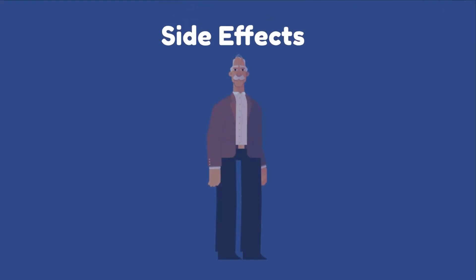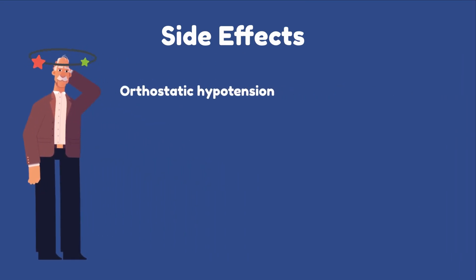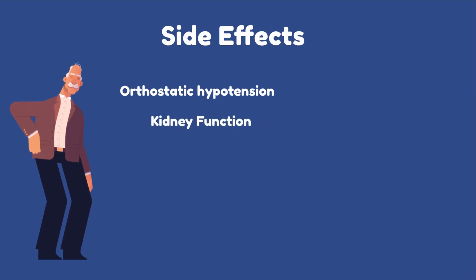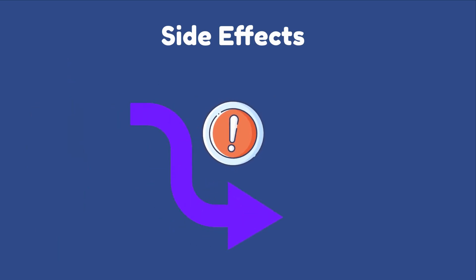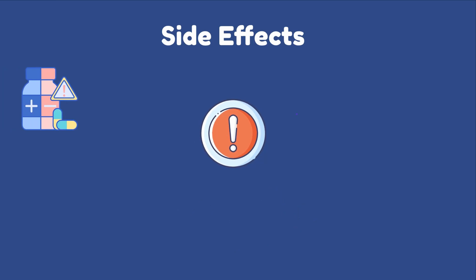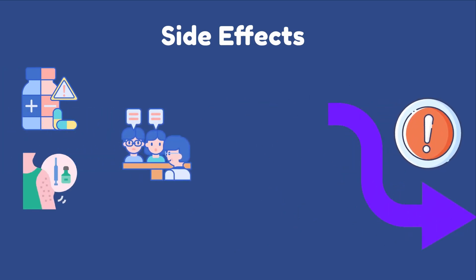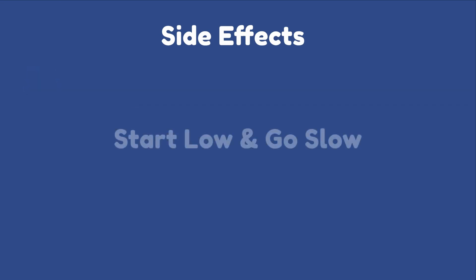It is important to remember that almost all medications come with side effects, such as dizziness when standing up — also known as orthostatic hypotension — decreasing kidney function, imbalanced electrolytes, and persistent cough with ACE inhibitors, as well as drug-drug interactions such as when taking ACE inhibitors and ARBs together. Avoiding unwanted side effects can be done by checking for drug interactions, monitoring patients for side effects, and counseling patients to help manage these medications. Always remember to start low and go slow with dosing, which helps patients adjust better and decreases blood pressure in a controlled manner.